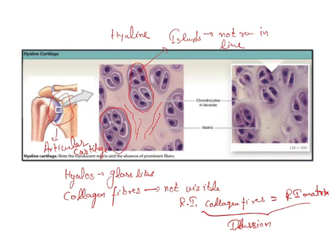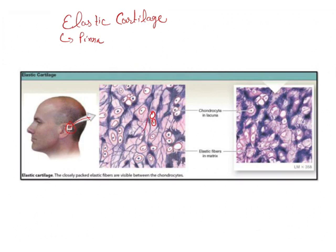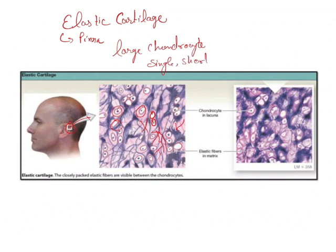Elastic cartilage is most prominently seen in the pinna. In elastic cartilage you see short, single, branching fibers running through the tissue. These are the chondrocytes, and you will see the branching fibers which are quite short and running singly. The chondrocytes are larger than normal — a single chondrocyte is quite large here — and the short single branching fibers help identify this as elastic cartilage.